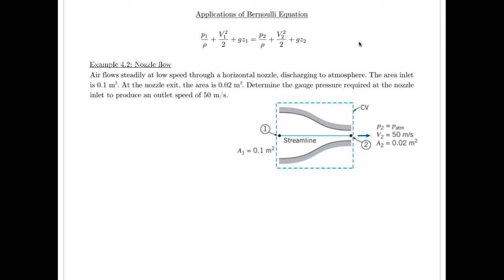So it says, air flows steadily at low speed through a horizontal nozzle, discharging to atmosphere. We remember that just means the pressure at the discharge point is atmospheric pressure. And it says the area inlet is 0.1 meters squared. At the nozzle exit, the area is 0.02 meters squared. So we have to determine the gauge pressure required at the nozzle inlet that's going to give us an outlet speed of 50 meters per second.